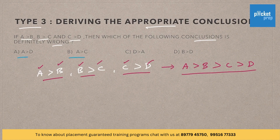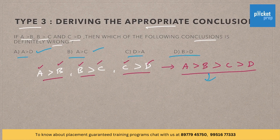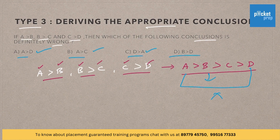Now let us look for the options. A is greater than D, which is correct. A is greater than C, which is correct from this expression. D is greater than A — is it true? D is not greater than A. So option C is the wrong answer.